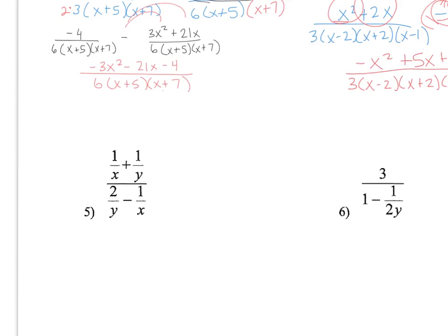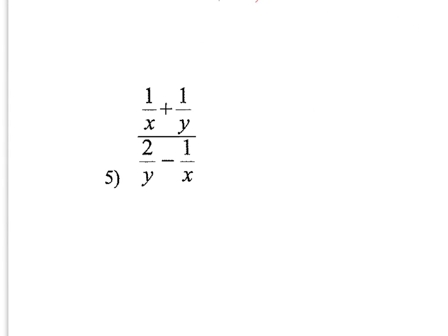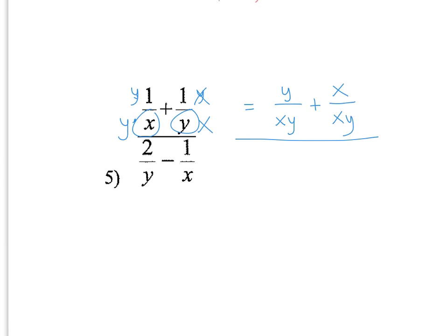All right, and these are called complex fractions — fractions within a fraction. So you're adding these two and adding these two. What you want to do is get a common denominator. My common denominator is going to be xy. So the numerator becomes y over xy plus x over xy.